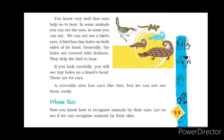Now, some animals have skin with hair on their body; some have feathers. You now know how to recognize animals by their ears. Let us see if you can recognize animals by their skin. We have learned about animals whose ears are not visible, and now we have to recognize some animals by the pattern of their skin.